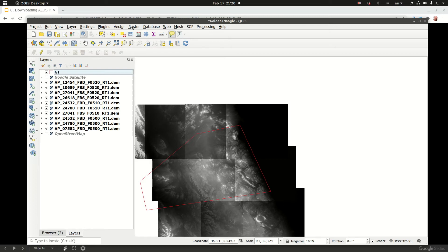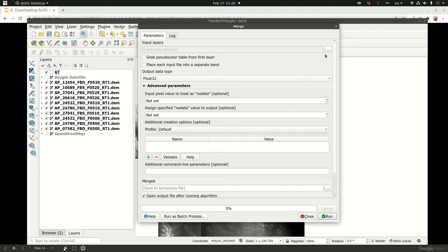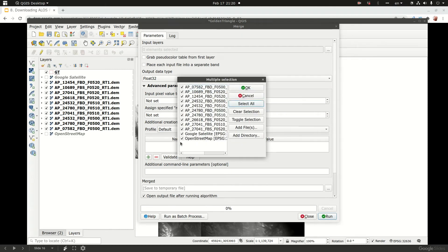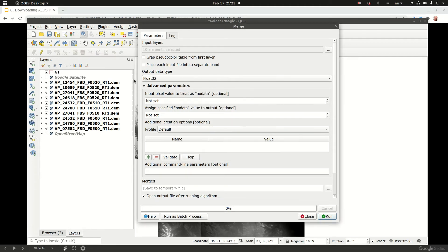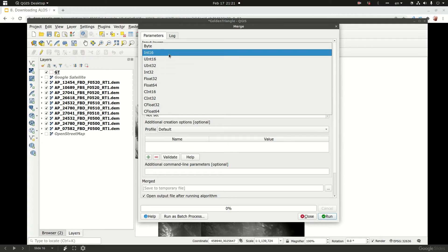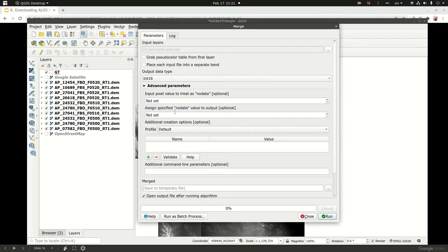Here's the data that I was able to download. What I'm going to do now is merge them into one mosaic. I'm going to Raster, Miscellaneous, Merge, and then I'm going to choose all of them. Uncheck Google Satellite and OpenStreetMap base maps. The data set is actually a signed integer 16-bit. I'm going to set -9999 as a value for the resulting no data cells. I'm not going to save it, I'll just leave it as a temp file and run.